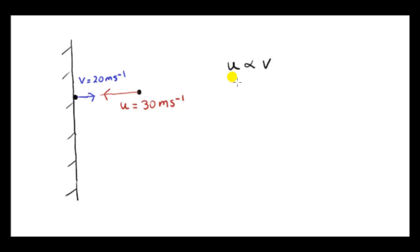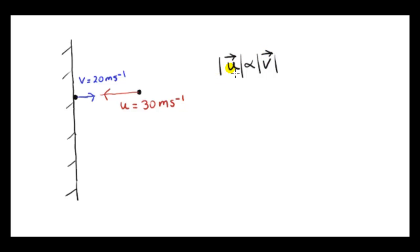The speed immediately before impact is proportional to the speed immediately after impact. We have to be careful here — I'm talking about speeds, not velocities. We could write it indicating the magnitude of vector u as the initial speed and the magnitude of vector v as the final speed.